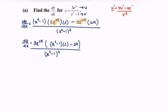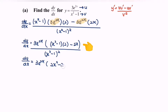Next, expand the situation, then simplify. So dy/dx is equal to 3e to the power 2x, bracket, 2x squared minus 2 minus 2x, over x squared minus 1 to the power of 2.